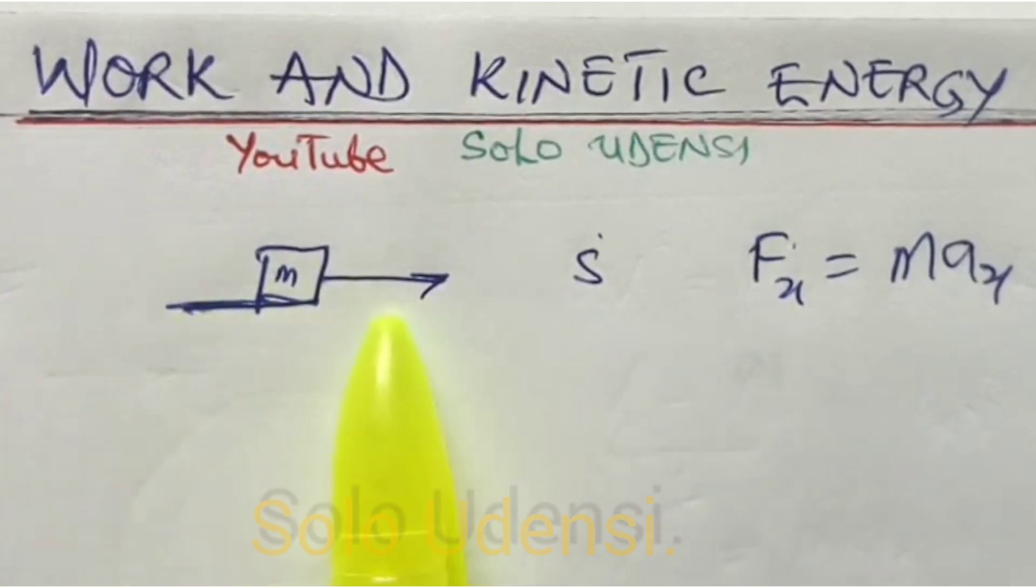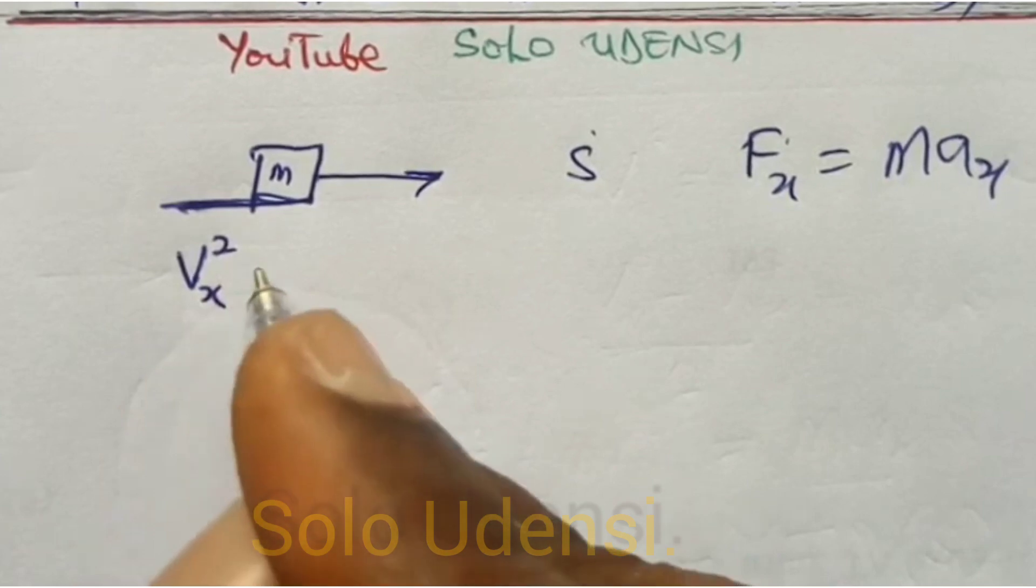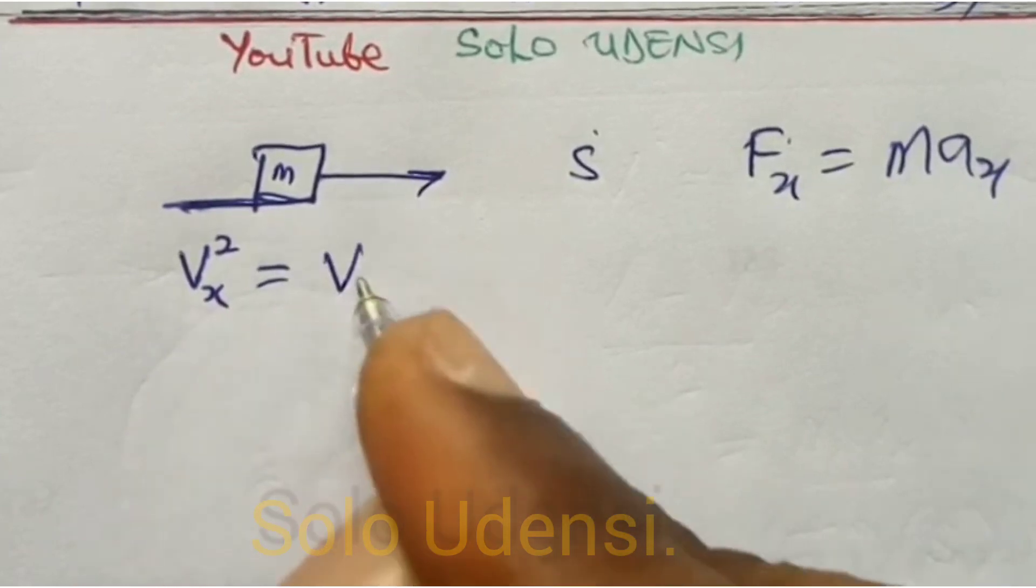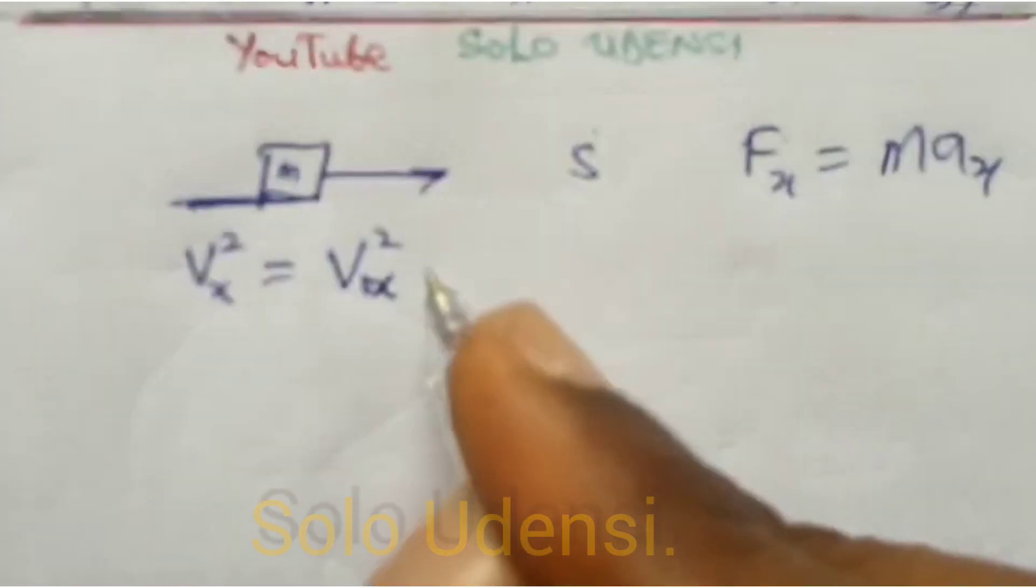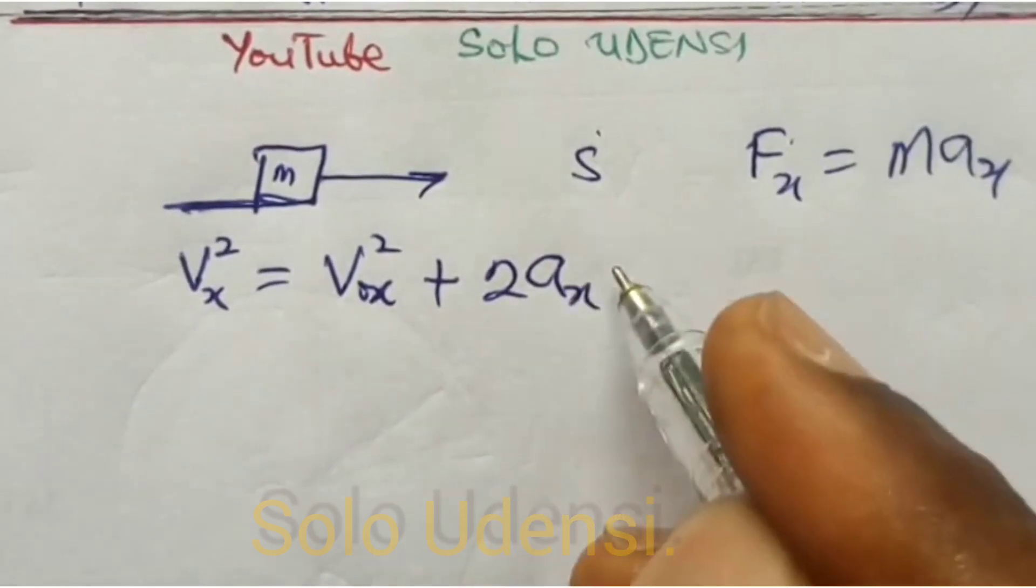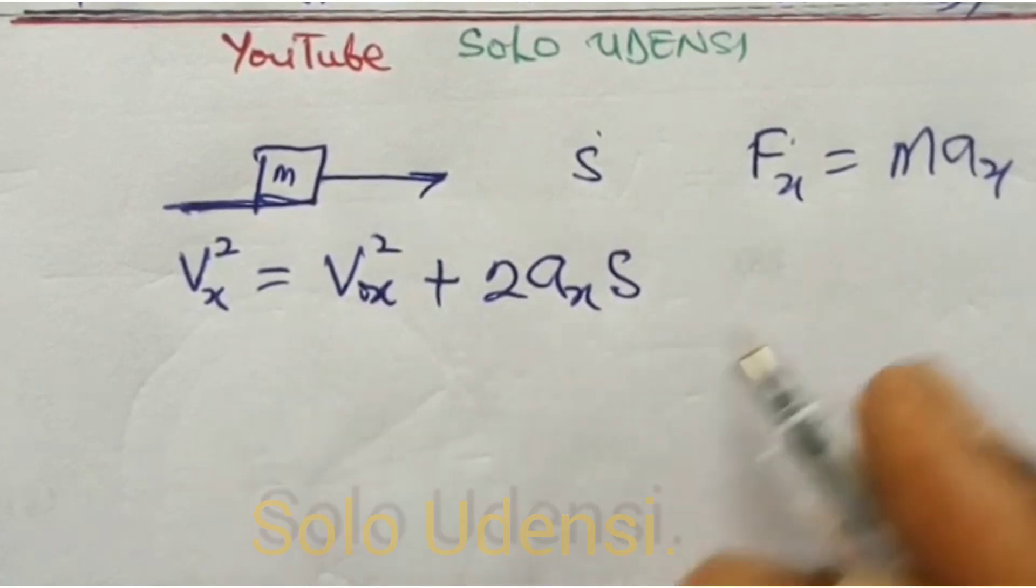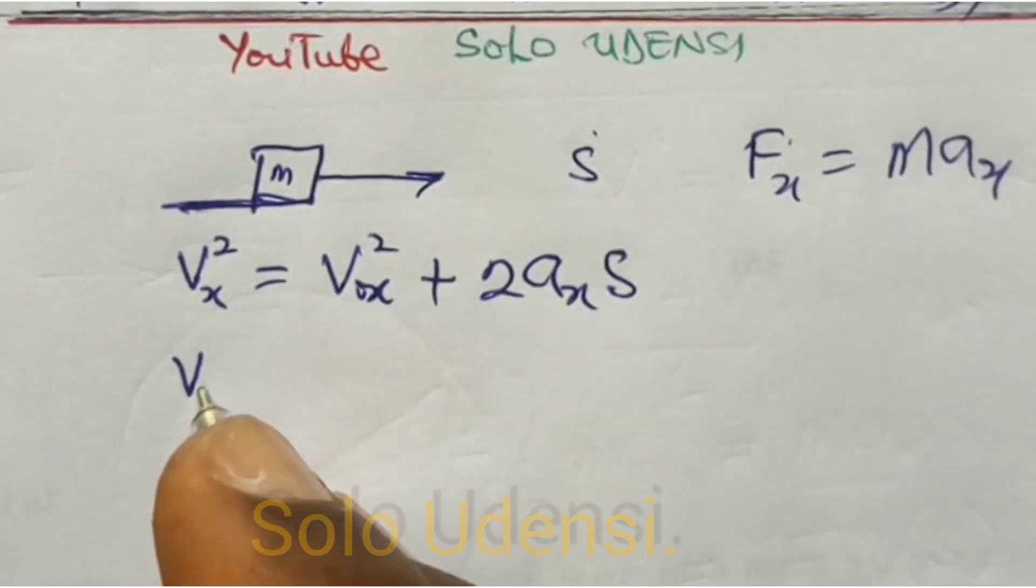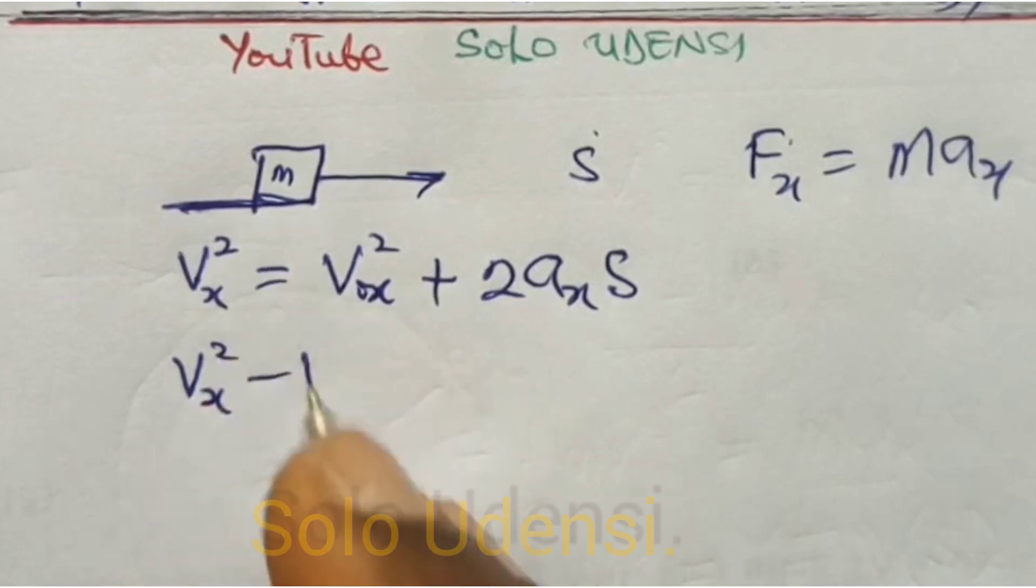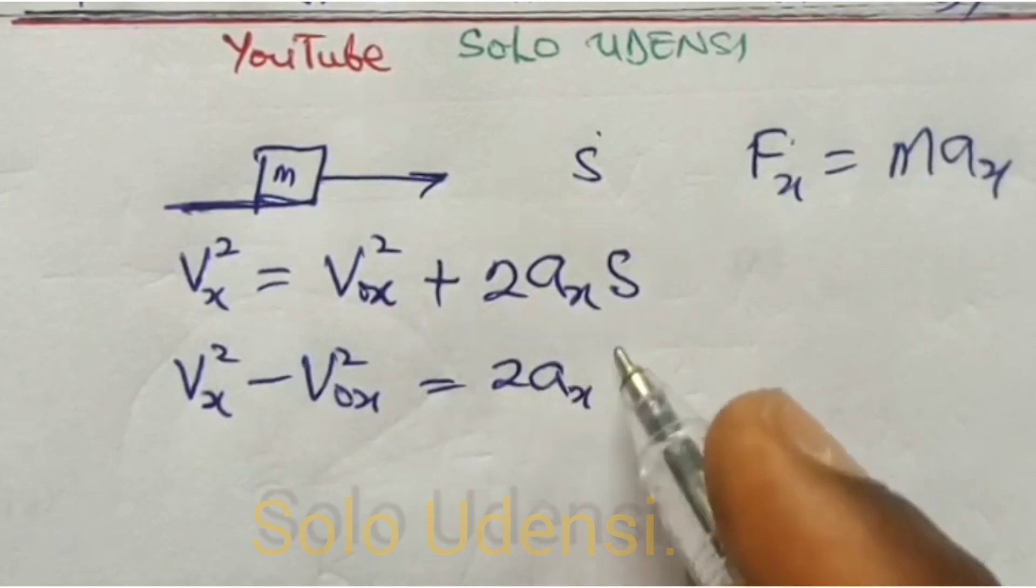As the body moves along this place, it will change the velocity from initial velocity to the final velocity. So if we use Vf² along X axis as equal to initial velocity squared plus 2 times acceleration along that axis times S, so that when we rearrange, we have that Vx² minus V₀x² is equal to 2axS.